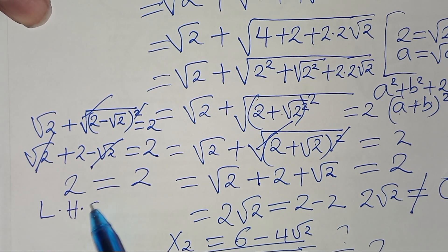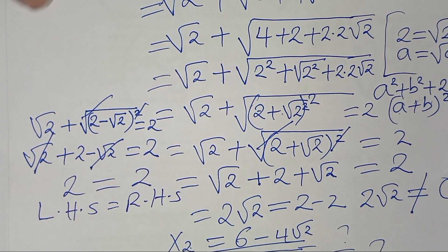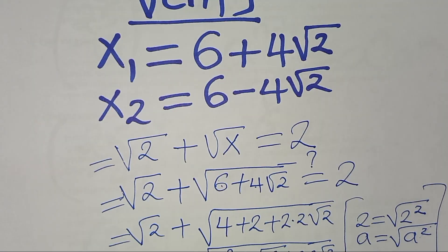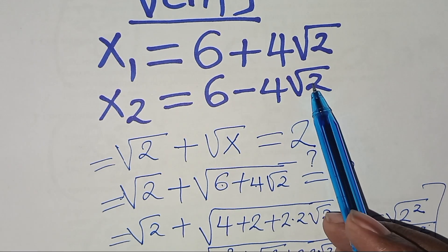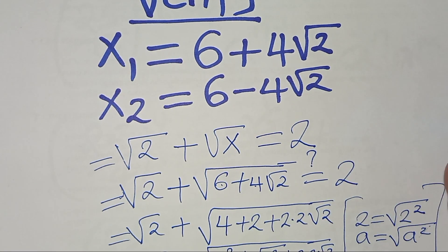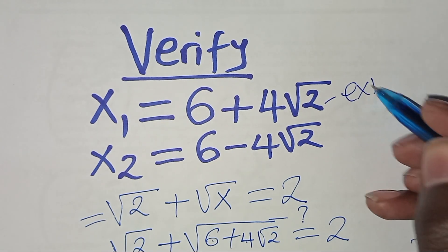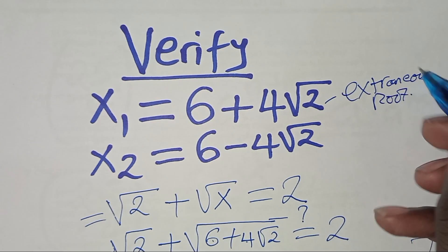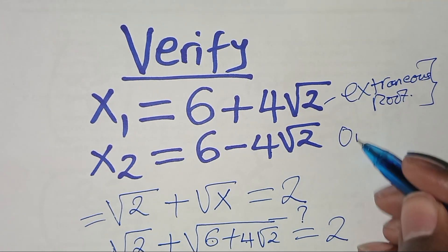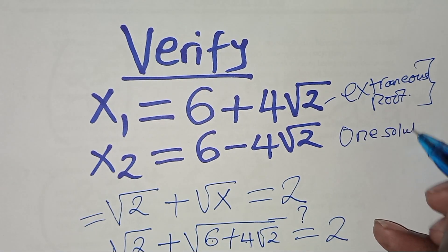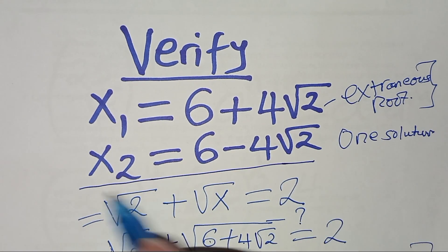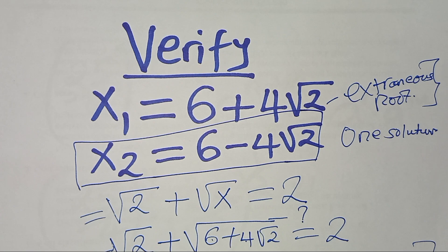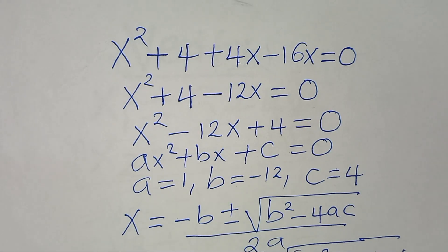Since the left-hand side equals the right-hand side, x₂ = 6 − 4√2 satisfies the original equation. Therefore x₁ = 6 + 4√2 is an extraneous root, and the only valid solution is x = 6 − 4√2. Thank you for watching — please like and subscribe!